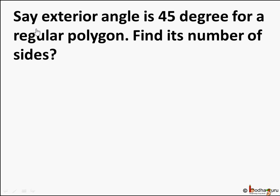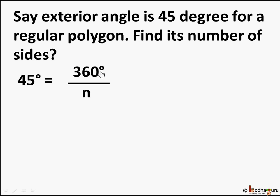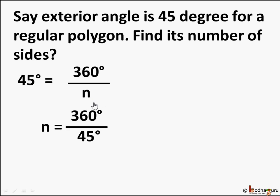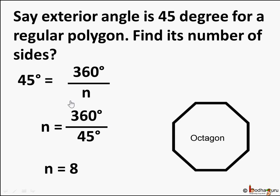Let's take a problem. Say the exterior angle is 45 degrees of a regular polygon and we need to find its number of sides. Using the formula — each exterior angle of a regular polygon equals 360 degrees divided by number of sides — we substitute: 45 equals 360 divided by n, so n equals 360 divided by 45, which comes out to be 8. So a regular polygon of 8 sides is an octagon. Given the number of sides you can find each exterior angle, or given each exterior angle you can find the number of sides. That's all in this lesson, children — bye bye!